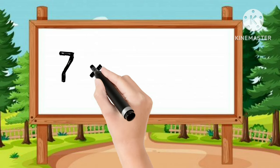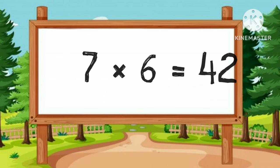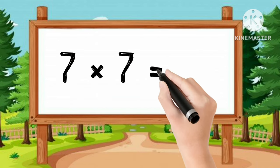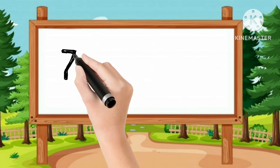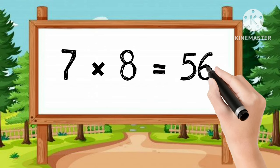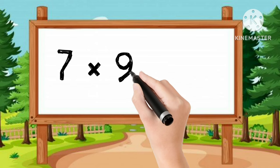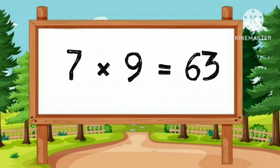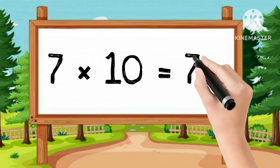7-6s are 42. 7-7s are 49. 7-8s are 56. 7-9s are 63. 7-10s are 70.